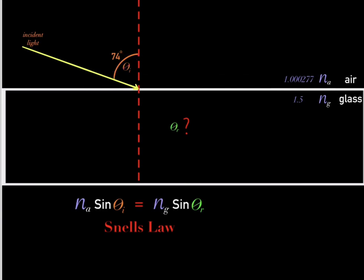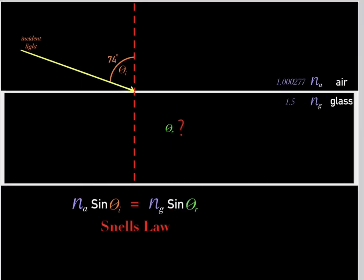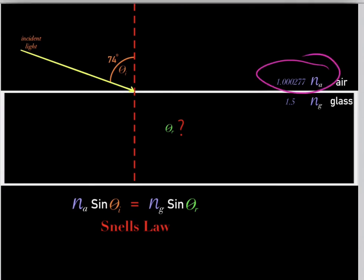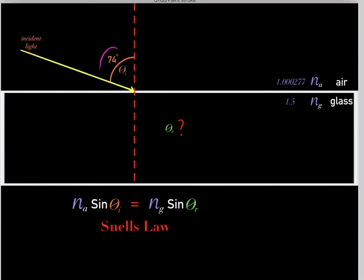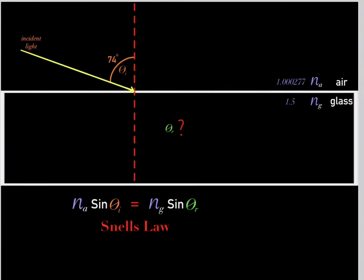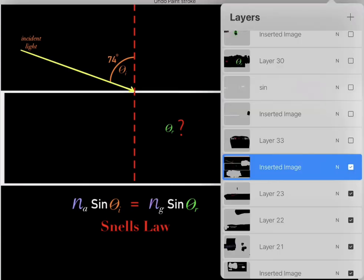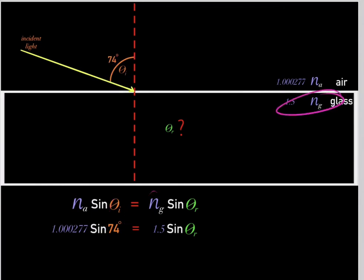If we know this angle of incidence, how do we determine the angle of refraction? Will the angle of refraction be small or large? We use Snell's law and plug in all the values. The index of refraction of air is 1.000277, the angle of incidence is 74 degrees, and the index of refraction of glass is 1.5. We plug in all the values and are left with the equation to solve for the angle of refraction.